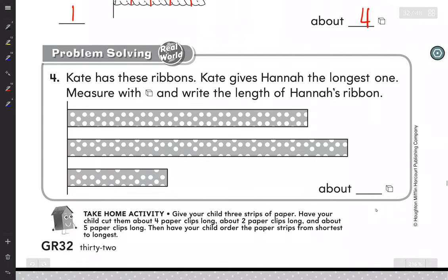Now problem solving. Number four here. Kate has this ribbon. Kate has three ribbons. Kate gives Hannah the longest one. And write the length of Hannah's ribbon.